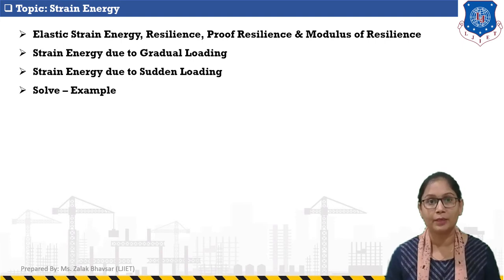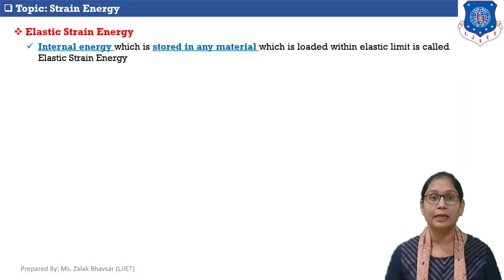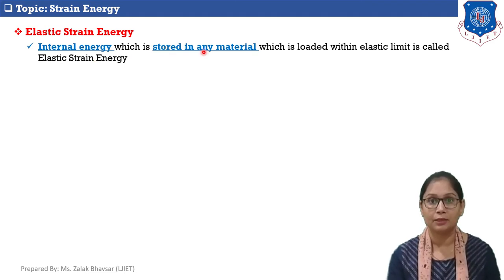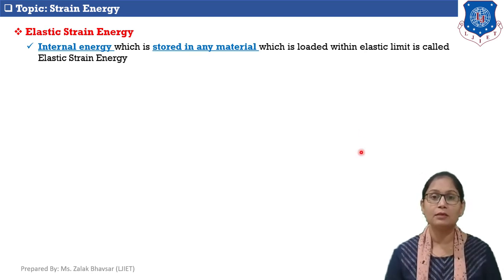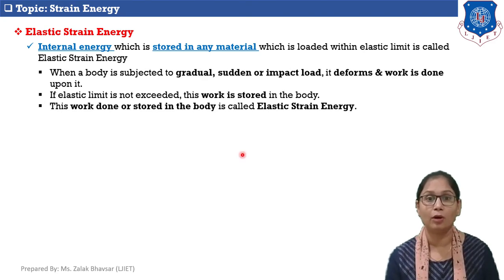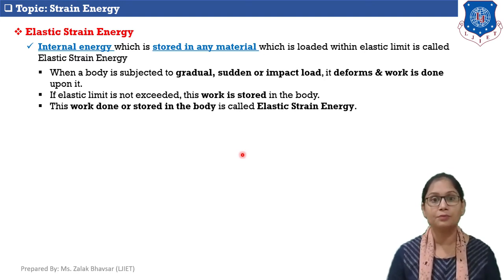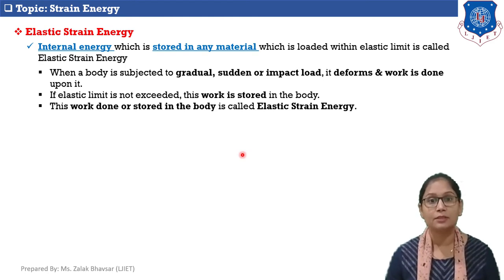Let's start with the basic terminology. Elastic strain energy: the internal energy which is stored in any material which is loaded within the elastic limit is called elastic strain energy. In simple words, when a body is subjected to gradual, sudden, or impact type of loading, it deforms and work is done upon it. If the elastic limit is not exceeded, this work is stored in the body.